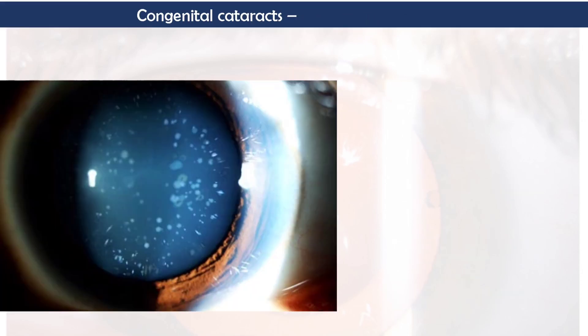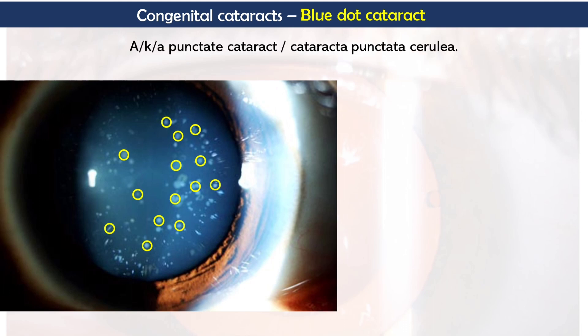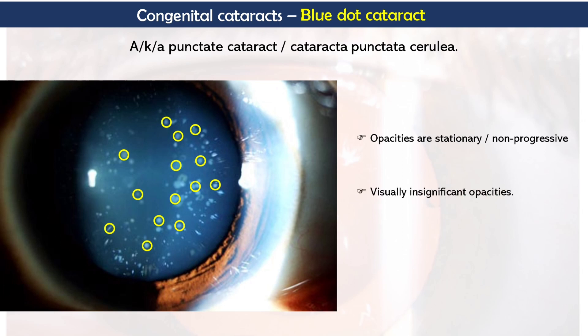Now let's talk about the types of congenital cataracts. The most common is blue dot cataract. In this cataract, opacities appear in blue color and are scattered throughout the lens as small dots. That's why it is also known as punctate cataract or cataracta punctata cerulea, where cerulea means deep sky blue color. These opacities are stationary or non-progressive, visually insignificant, do not affect vision, and do not require surgery. This punctate cataract is associated with Down syndrome.